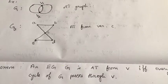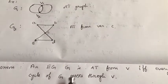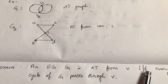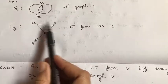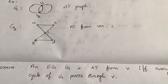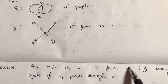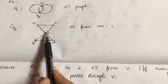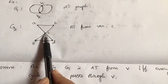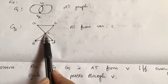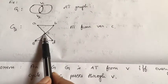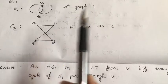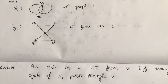Now I hope you understand why the two-triangle graph is not arbitrarily traceable from A, B, E, or D. For an Euler graph to be arbitrarily traceable from a vertex, every circuit must pass through that vertex. In the two-triangle example, both cycles pass through vertex C, so it is arbitrarily traceable from C.